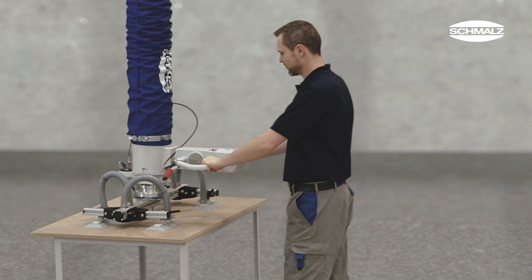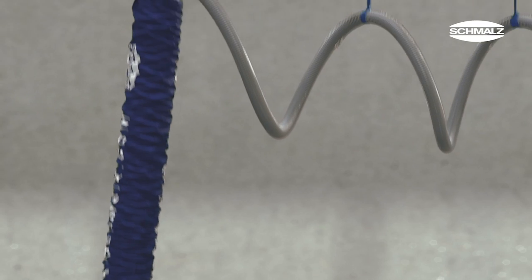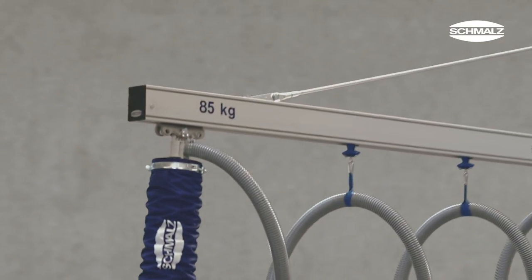The Jumbo Ergo is designed for different load ranges up to 300 kilograms. Schmalz offers crane systems that are configured specifically to match the lift capacity.